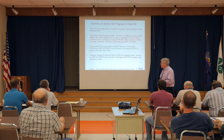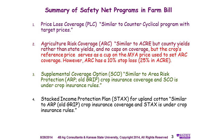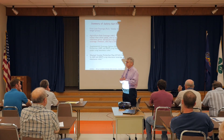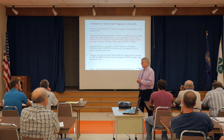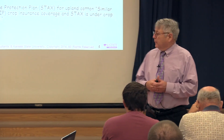The second program is Agricultural Risk Coverage. It's very similar to ACRE, but it's based on county yields rather than state yields. The other major difference is it has a 10% stop loss — ACRE had a 25% stop loss. It's a similar kind of thing, except rather than using state yield, it uses county yield, which is obviously closer to the farm and should be more representative of what's actually going on in your area.